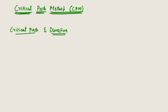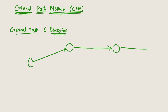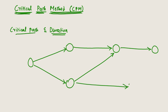That is also called the project duration. So for any network, in any project we have different paths available to complete the activities. This is a network diagram. We can name the activities as: A, B, C, D, E, F, and G.